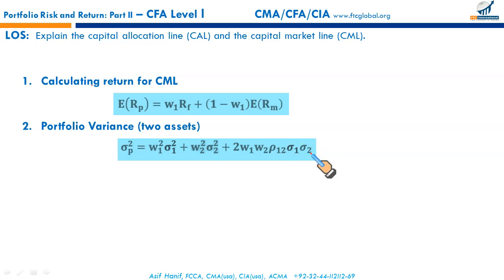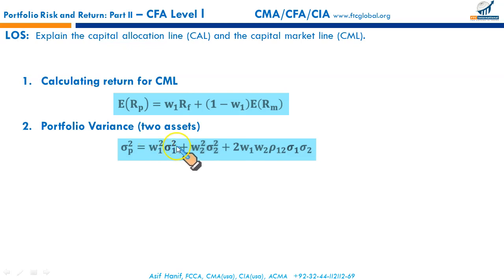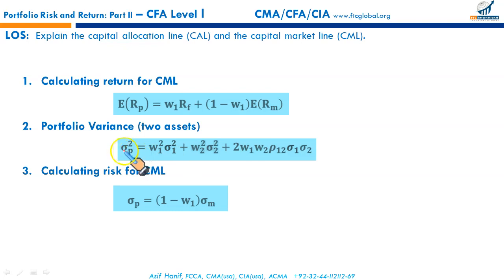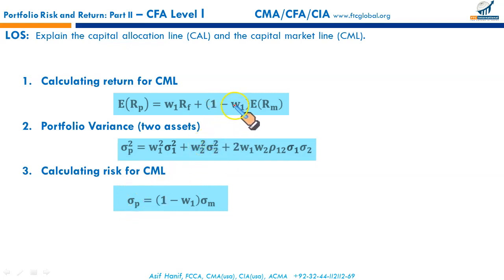Since the risk for the risk-free asset is zero, the terms involving the variance and standard deviation of the risk-free asset become zero. So what you have in the end is just W2 squared times the variance of the risky asset. If you take the square root, that becomes the standard deviation of the portfolio. Representing W2 as (1 minus W1), and this variance becomes simply the variance of the market portfolio — that is, the standard deviation of the market portfolio.